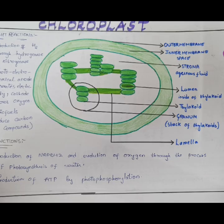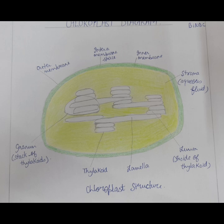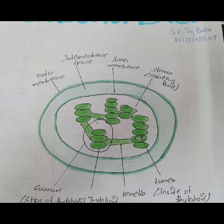Chloroplasts are distinguished from other types of plastids by their green color, which results from the presence of two pigments: chlorophyll A and chlorophyll B.